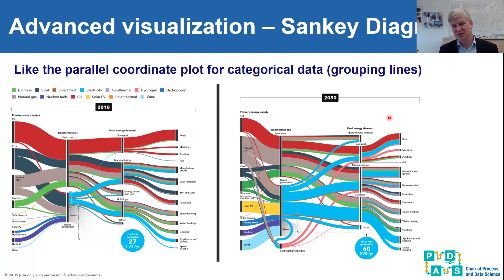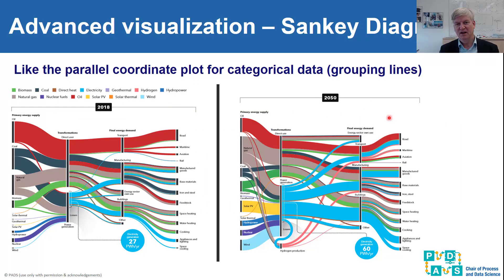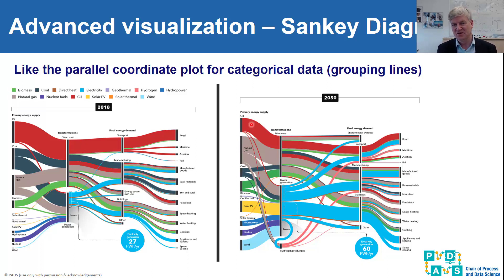A Sankey diagram is actually the same as a parallel coordinate plot, but applied to categorical data. Therefore we cannot see individual instances but instead the thickness of a line indicates how many instances have a particular value for one feature and another particular value for another feature. Here we are comparing two Sankey diagrams based on time.